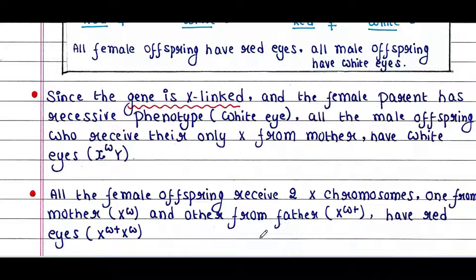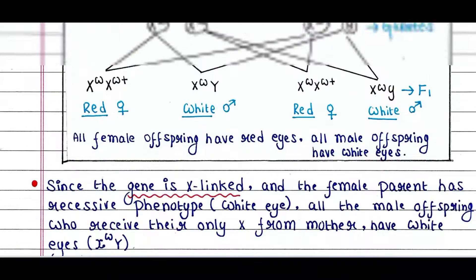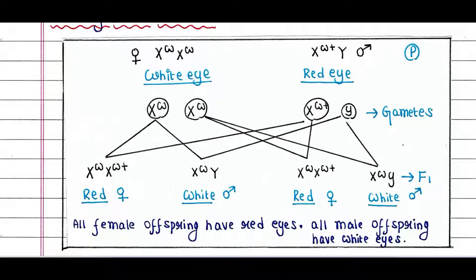All female offspring receive two X chromosomes — one from the mother and one from the father — and they have red eyes. They have the genotype Xw+Xw: they get Xw from the mother and Xw+ from the father, giving them red eyes.